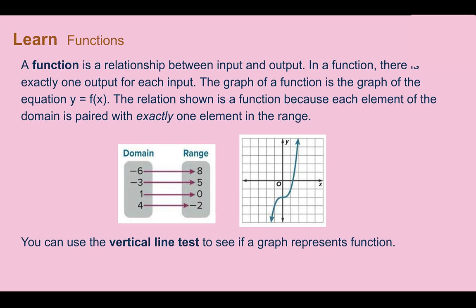The relation shown is a function because each element of the domain is paired with exactly one element in the range. Looking at the mapping: negative 6 only goes to one number, negative 3 only goes to 5, 1 only goes to 0, and 4 only goes to negative 2. This is a function because each thing in the domain only goes to one thing in the range.